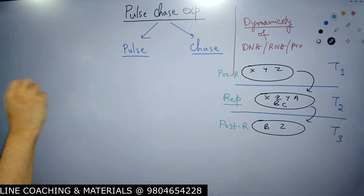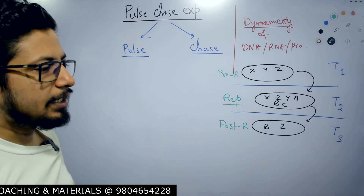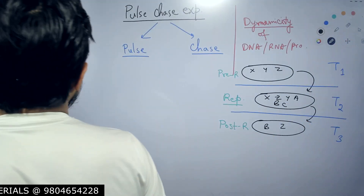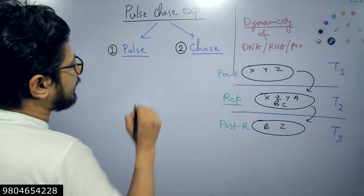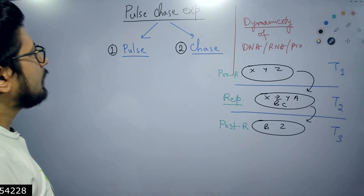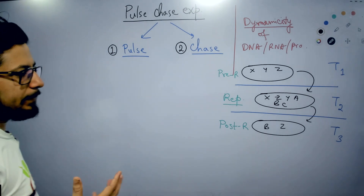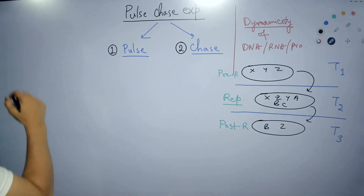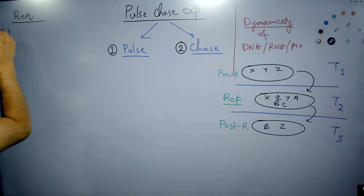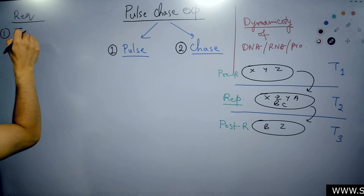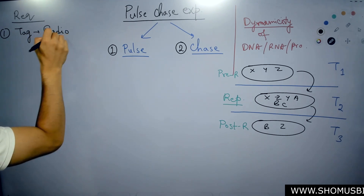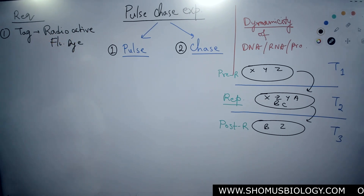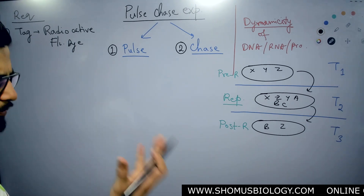Now let's come back to how the Pulse Chase Experiment is done. We know why it is done. Now let's see how it is done. It has two different components — the Pulse part, which is the first part of the experiment, and the Chase part, which is the second part. In this experiment, we need a dye to tag the macromolecules. The tag can be a radioactive tag or a fluorescent dye — radioactive molecules or fluorescent dye. Either of them can act as a tag.